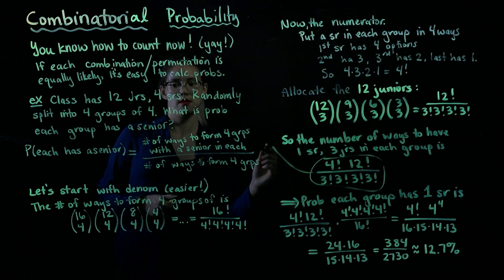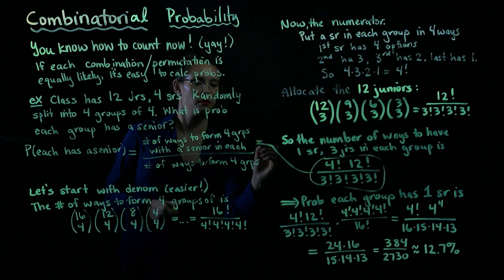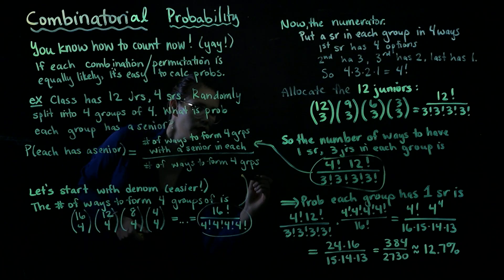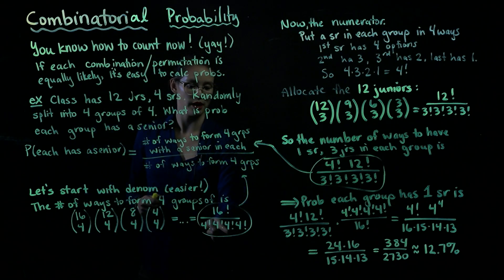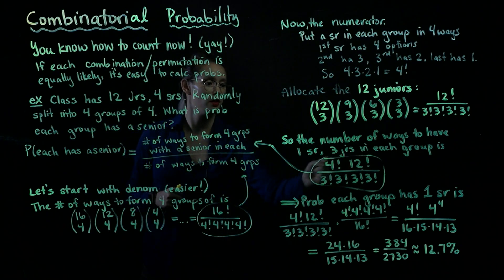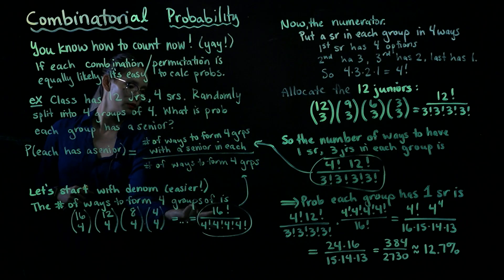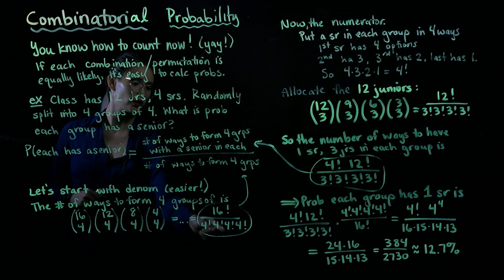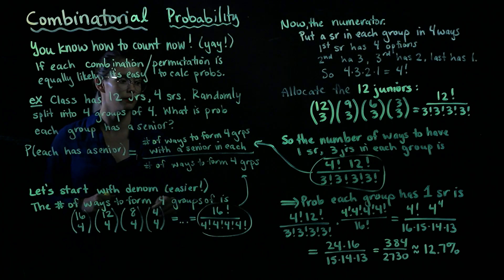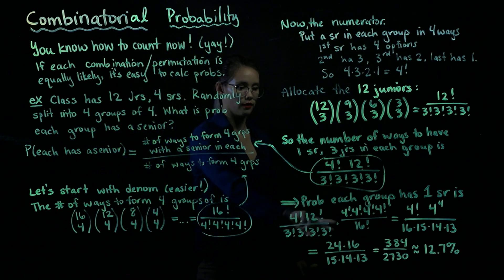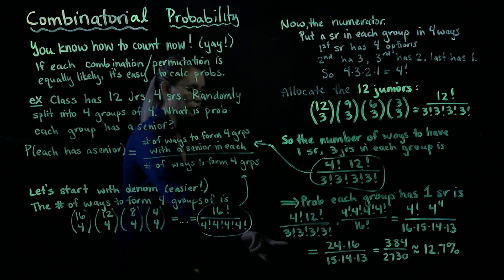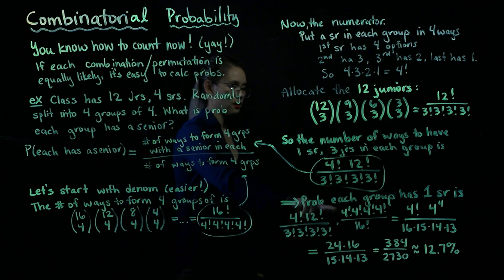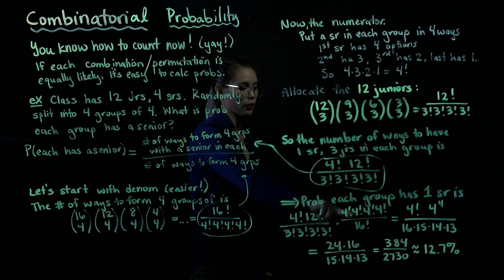This numerator divided by the denominator — which is 16 factorial divided by 4 factorial to the fourth power — is the same as multiplying the numerator by 4 factorial times 4 factorial times 4 factorial times 4 factorial, divided by 16 factorial. So we have 4 factorial times 12 factorial divided by 3 factorial to the fourth, multiplied by 4 factorial to the fourth divided by 16 factorial.